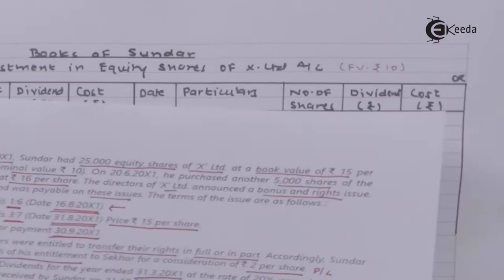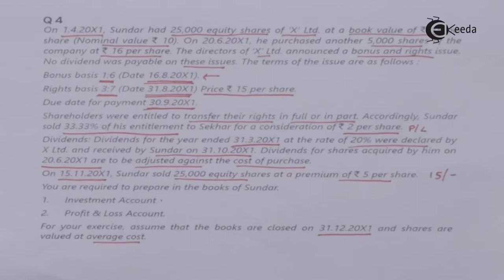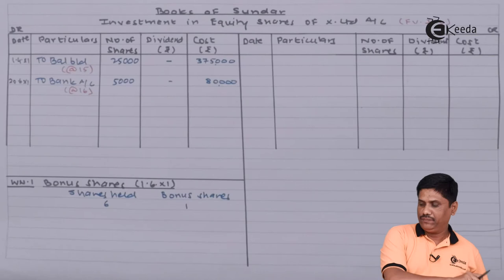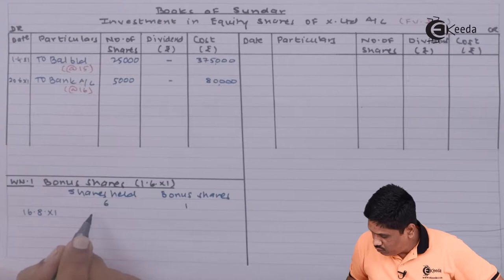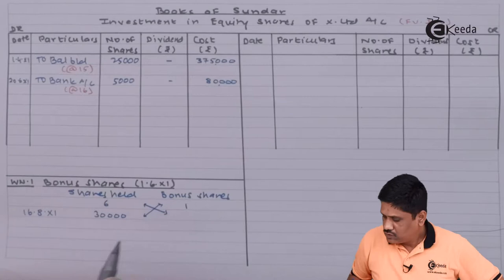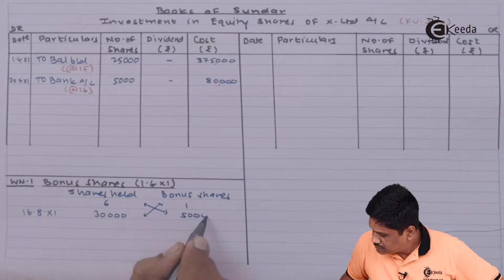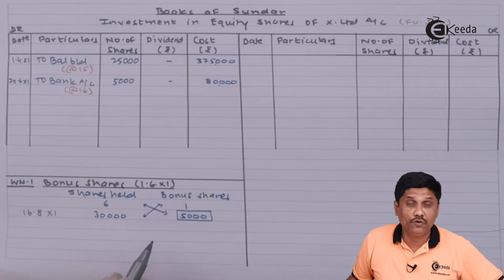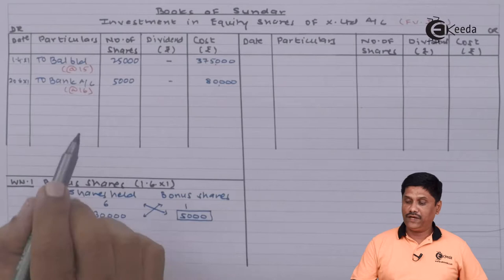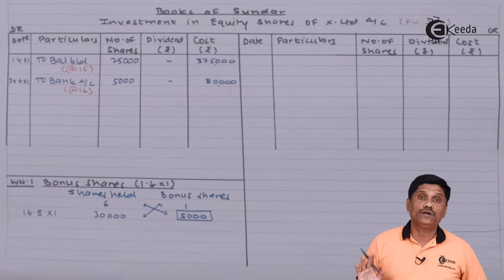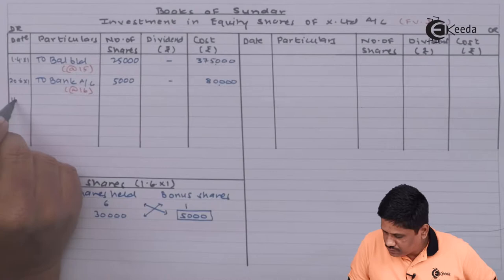On 16th August — the record date — we check how many shares are held. As per the account, we hold 30,000 shares. So I was holding 30,000 shares on 16th August X1. By cross multiplication, I will get 5,000 bonus shares. Since these are bonus shares, I do not pay anything. However, the number of shares must be entered in the account — recording them on the debit side of the investment account at nil cost, as the company has given these shares free of cost.